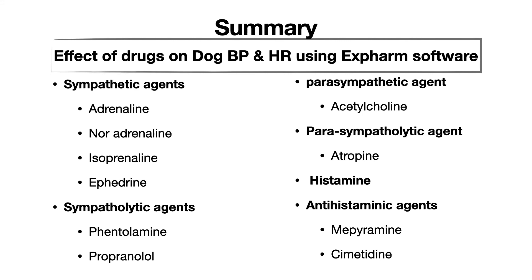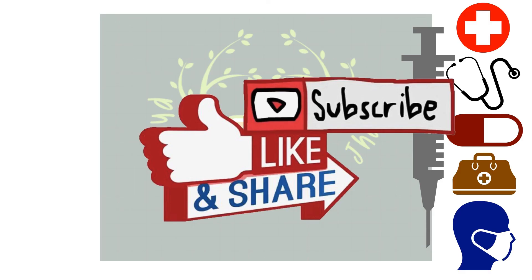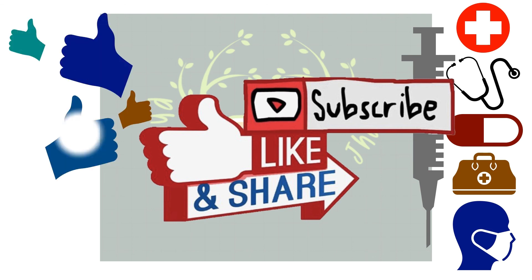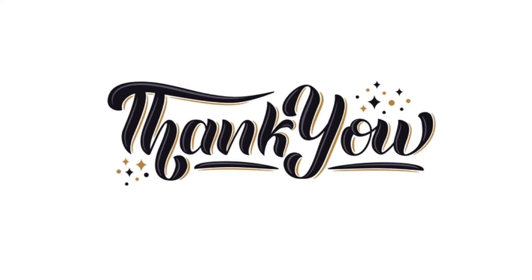To summarize, we have seen this list of drugs: sympathetic agents — adrenaline, noradrenaline, isoprenaline, and ephedrine; sympatholytic agents — phentolamine and propranolol; parasympathetic agent — acetylcholine; parasympatholytic agent — atropine; histamine; and antihistaminic agents — mepyramine and cimetidine. If you like my video, please subscribe to my channel and like and share this video. Thank you.